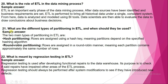What are the different types of partitioning in ETL and when should they be used? The two main types are: hash partitioning, where rows are assigned using a hash key, meaning partitions depend on the specified hashing algorithm; and round-robin partitioning, where rows are assigned in a round-robin manner, meaning each partition contains approximately the same number of rows.